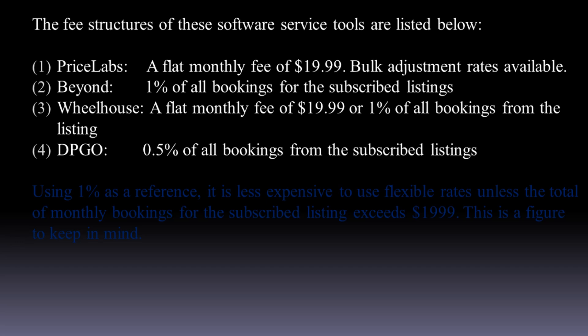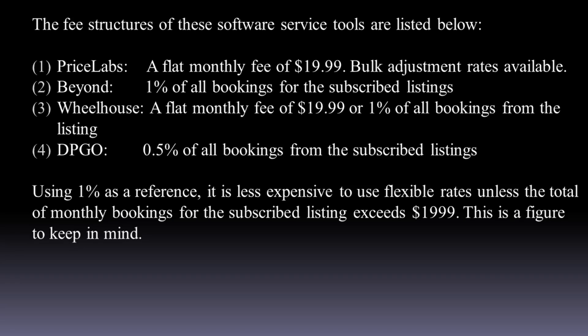The fee structures of these software tools are as follows. Pricelabs: a flat monthly fee of $19.99, with bulk adjustment rates available. Beyond: 1% of all bookings for the subscribed listings. Wheelhouse: a flat monthly fee of $19.99 or 1% of all bookings from the listing. DPGO: 0.5% of all bookings from subscribed listings. Using 1% as a reference, it is less expensive to use percentage-based rates unless the total monthly bookings for the subscribed listing exceeds $1,999.